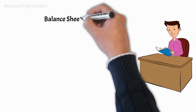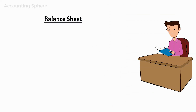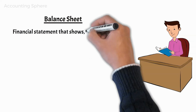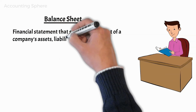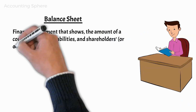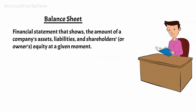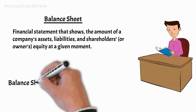John is now reading about the balance sheet. The balance sheet is a financial statement that shows the amount of a company's assets, liabilities, and shareholders' or owners' equity at a given moment. You can look at the balance sheet as a picture of a company's financial position at a certain moment — it reflects a precise point in time rather than a period of time. This is one of the differences between the balance sheet and the income statement.